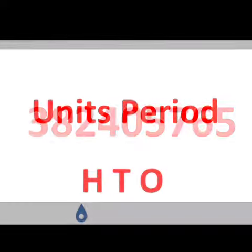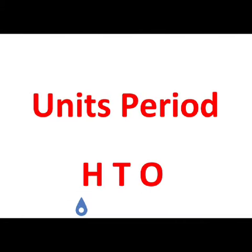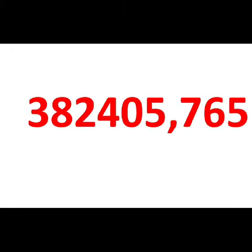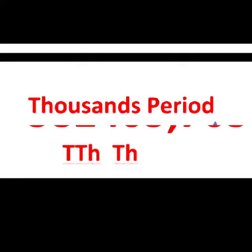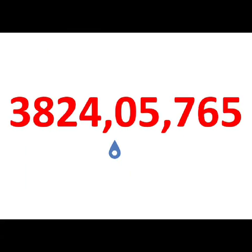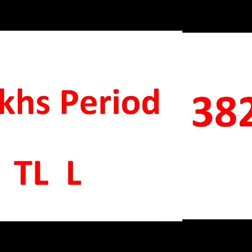The four periods of the number system are as follows. First is the unit period, which comprises ones, tens, and hundreds. Second is the thousand period, which comprises thousands and ten thousands.